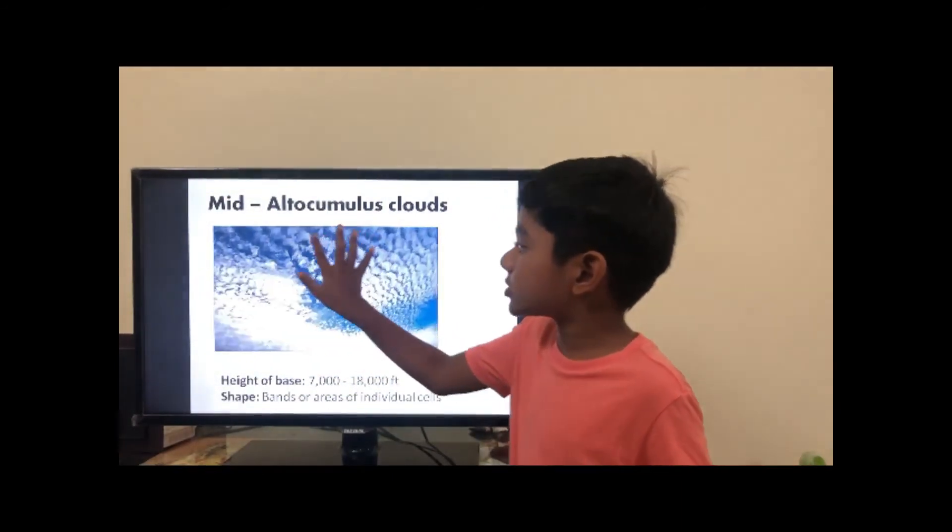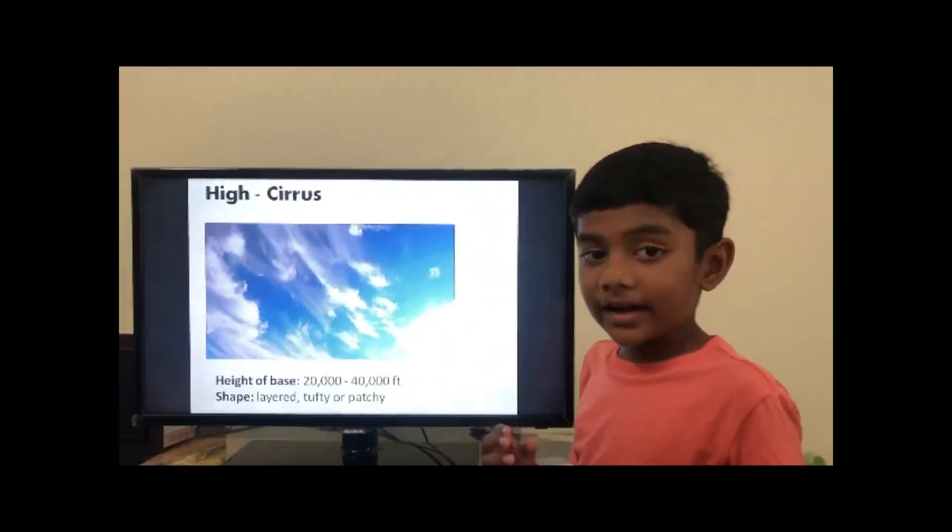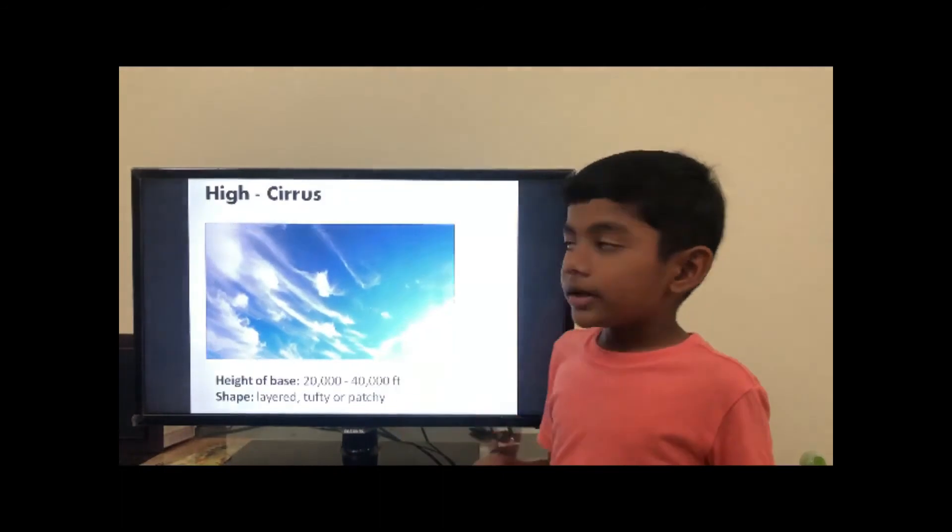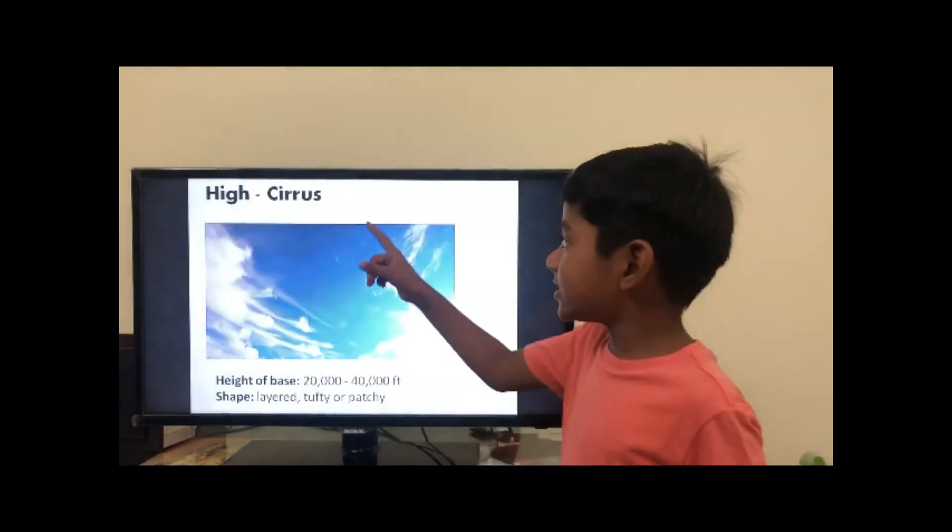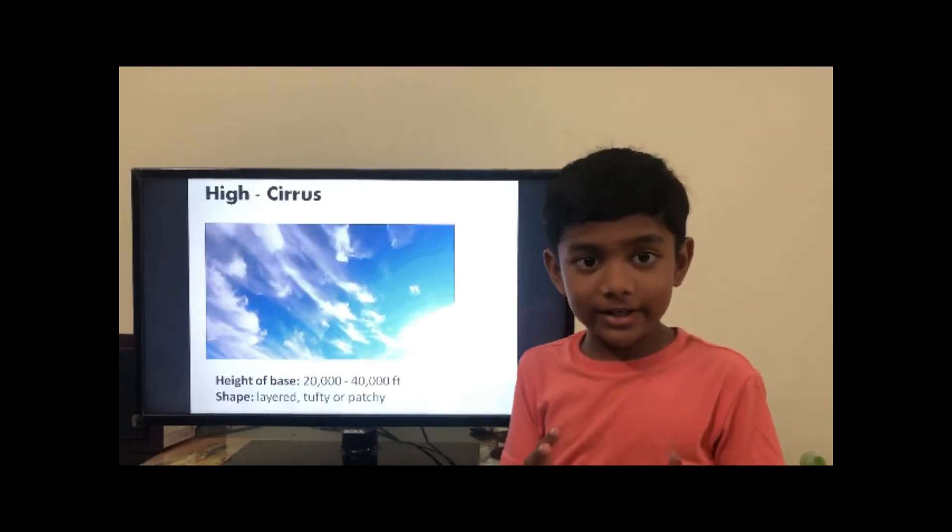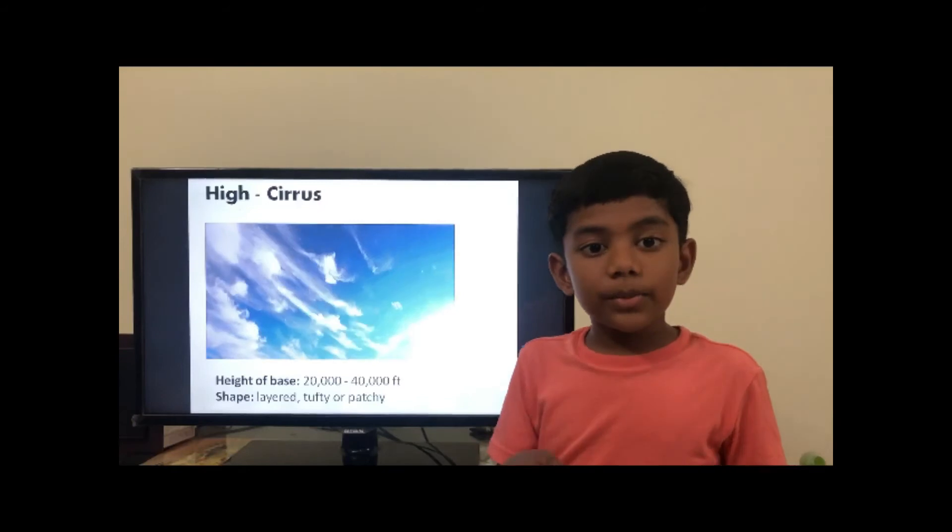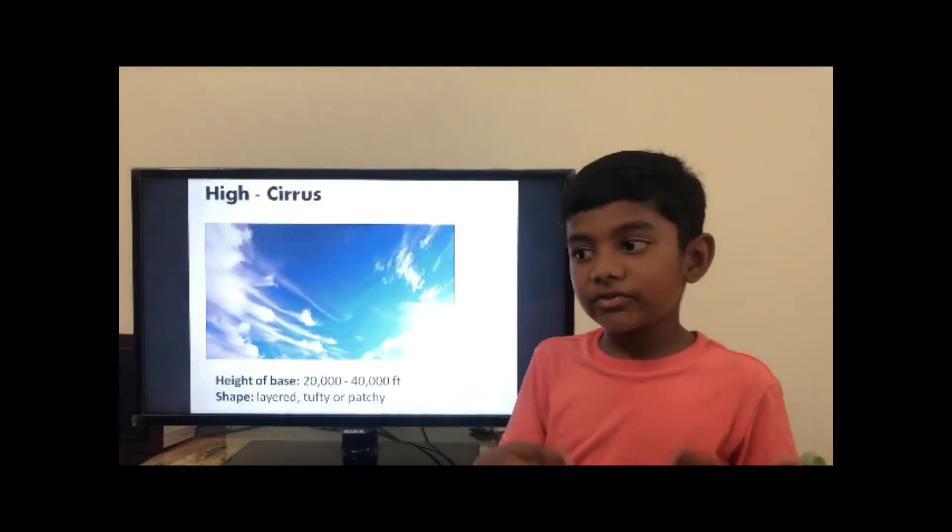Next, it is the high clouds. The most common high cloud is cirrus. Cirrus barely diminishes the sun's brightness and often appears before sunset and after sunrise. It looks like yellowish and red.